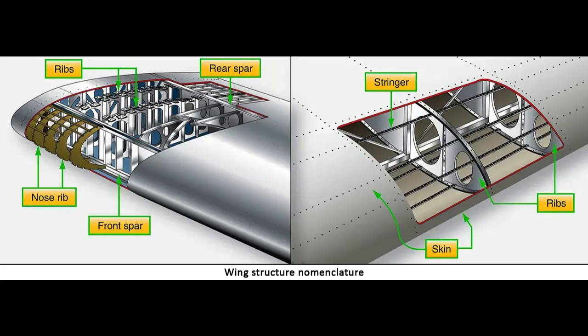In general, wing construction is based on one of three fundamental designs: one, mono spar; two, multi spar; and three, box beam. Modifications of these basic designs may be adopted by various manufacturers.